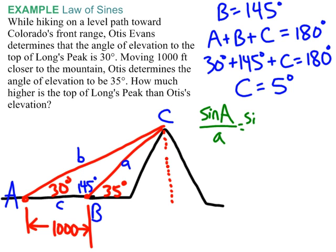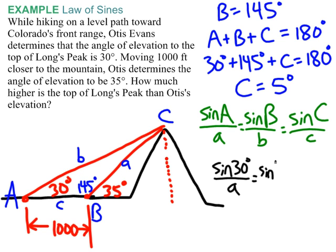Sine of A over little a equals sine of B over little b equals sine of C over little c. And plug in what we know. And we know all three angles, and we also know that little c equals a thousand. So, sine of 30 degrees over a equals sine of 145 degrees over b equals sine of 5 degrees over, and c, again, is a side length that we know. We know that little c is a thousand feet. So, let's consider that we want to find, let's say we want to find a. Again, I repeat, we could have found little b. That would also get us to our goal. We just have to pick one.